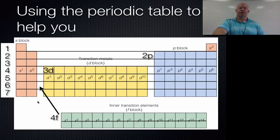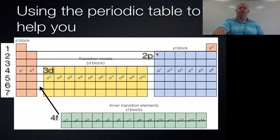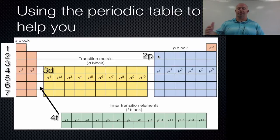If you are trying to fill out a particular element — let's say boron — boron would have 2 electrons in the 1S, 2 electrons in the 2S, and 1 electron in the 2P. The periodic table can really guide us as we work our way down; it patterns everything out for us, accounting for the overlapping.